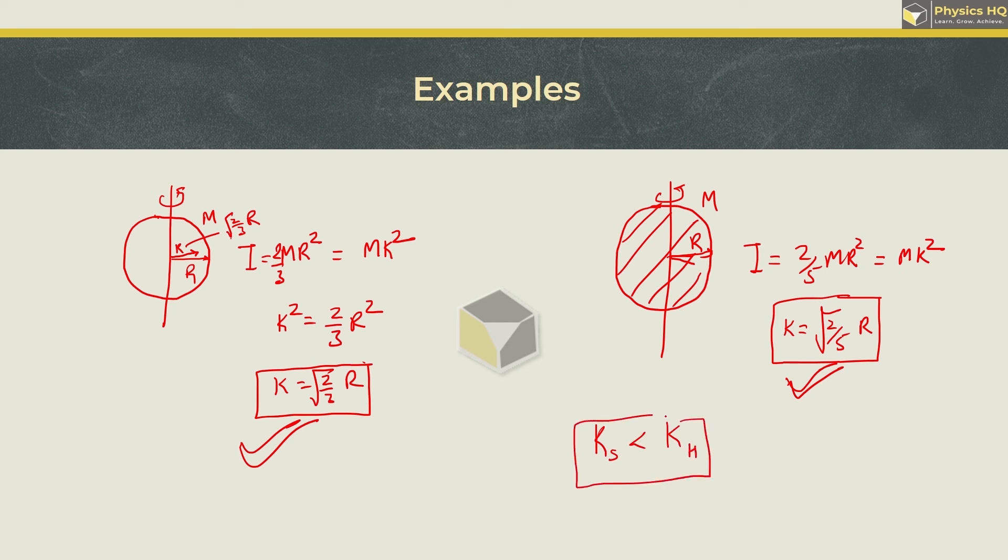Now why is this? Because in solid sphere the concentration of mass near to this axis of rotation is more compared to how far away it is. And in this hollow sphere, relatively the masses near to the axis is less compared to the masses which are away from this axis of rotation.